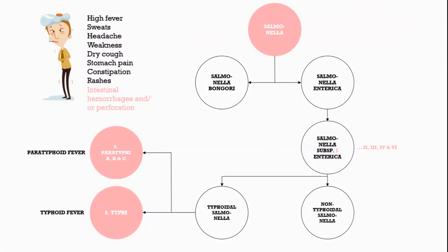The genus Salmonella can be subdivided into six subspecies by the Kaufmann-White classification. Salmonella bongori is subspecies 5, and Salmonella enterica includes subspecies 1, 2, 3, 4 and 6. Subspecies 1 can be further broken down into non-typhoidal Salmonella and typhoidal Salmonella. The latter means Salmonella paratyphi, which causes paratyphoid fever, and Salmonella typhi, which causes typhoid fever.